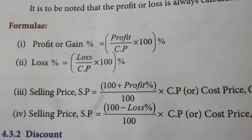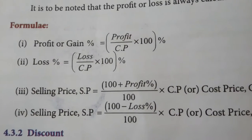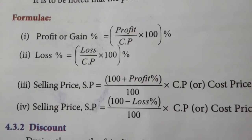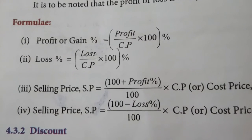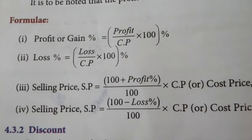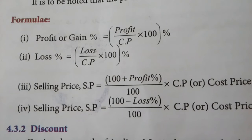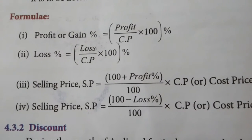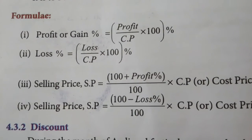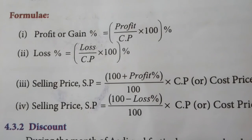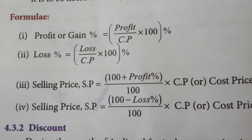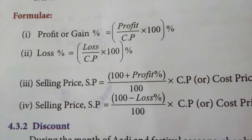And SP equals (100 minus loss) divided by 100, multiplied by CP. So if they give your CP and the loss, or your CP and the profit, you can use these formulas to find the remaining values. Copy these formulas in your classwork — it's very important. Just copying is not enough; you have to learn these formulas thoroughly, because the sums which I am going to teach are all based on profit and loss. If you know the formulas, it will help you with the next sums. Thank you.